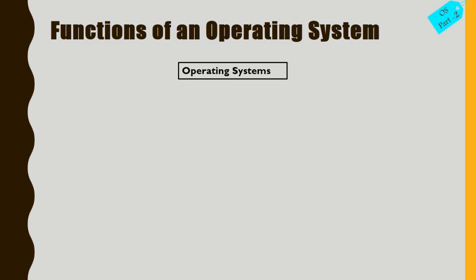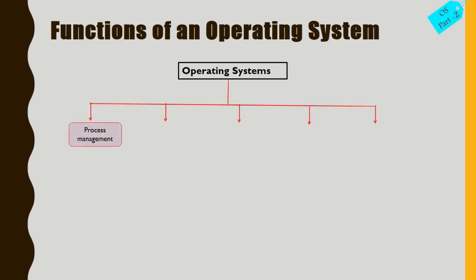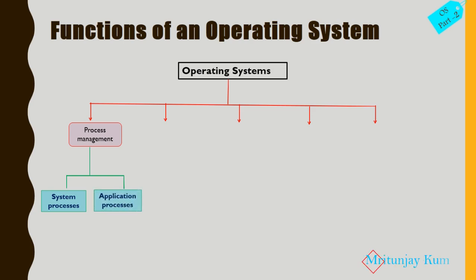Now let's discuss the functions of an operating system. The operating system has some major functions. The first function is process management, which includes two things: system processes and application processes.